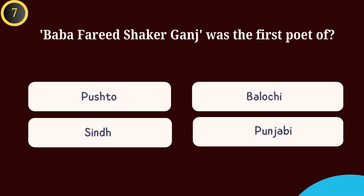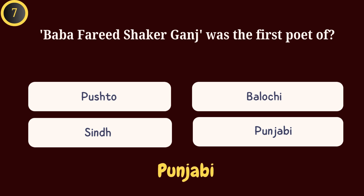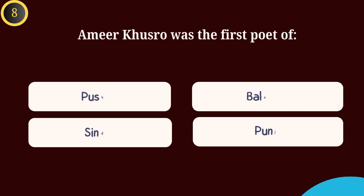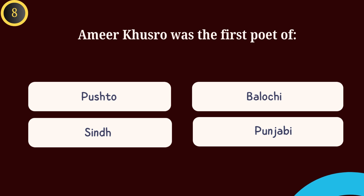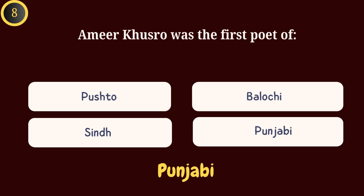Question 7: Baba Farid Shakar Ganj was the first poet of — Answer: Punjabi. Question 8: Amir Khusro was the first poet of — Answer: Punjabi.